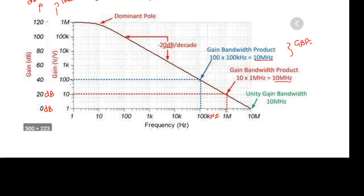If we measure the gain bandwidth product at unity gain — that is, when the gain is 1 or 0 dB — the corresponding frequency is called the unity gain bandwidth, and it is denoted by f1 or B1. This is the frequency at which the gain becomes unity, or 0 dB.